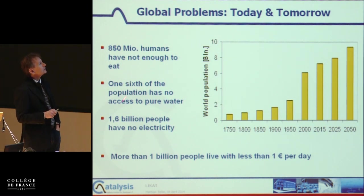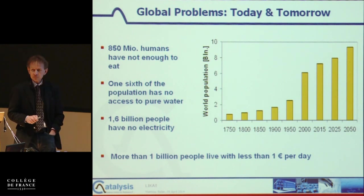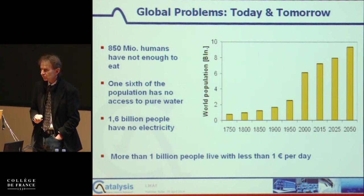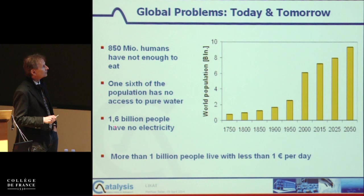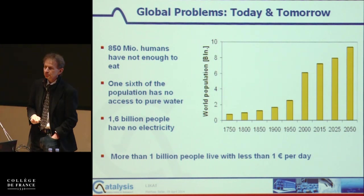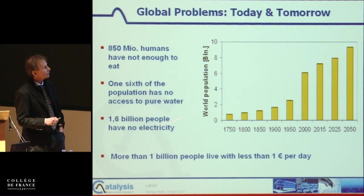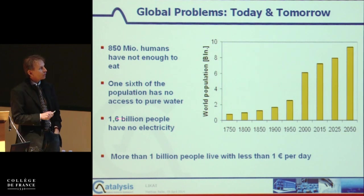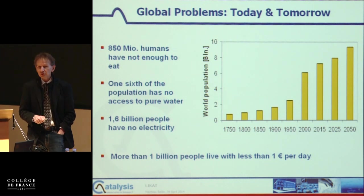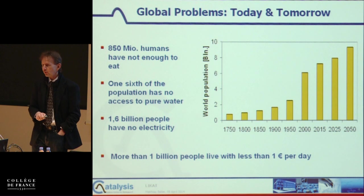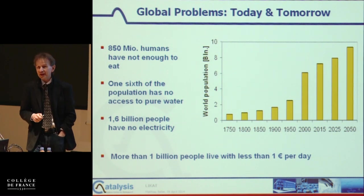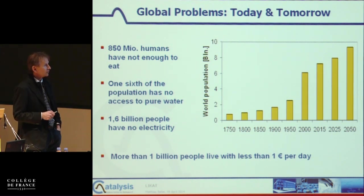Despite having enough food, we have a problem distributing it. A significant amount of the world population has no access to water, and an even bigger amount has no access to electricity. At the same time, we see a growing population — two years ago the seven billionth person was born, and soon we will have eight billion people in the next decade.